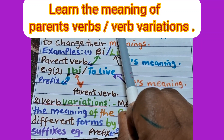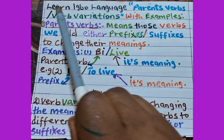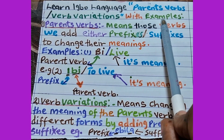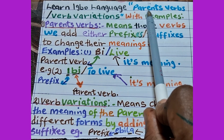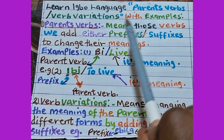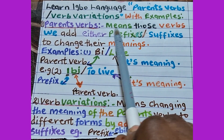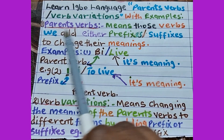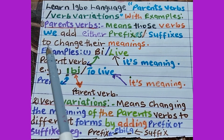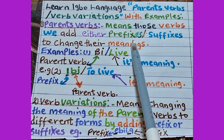Learn Igbo language. Our topic today is parent verbs and the verb variations. We are going to look into the meaning of parent verbs and the verb variations, with examples. Parent verbs means those verbs we add either prefixes or suffixes to, in order to change their meanings. That is the meaning of parent verbs.